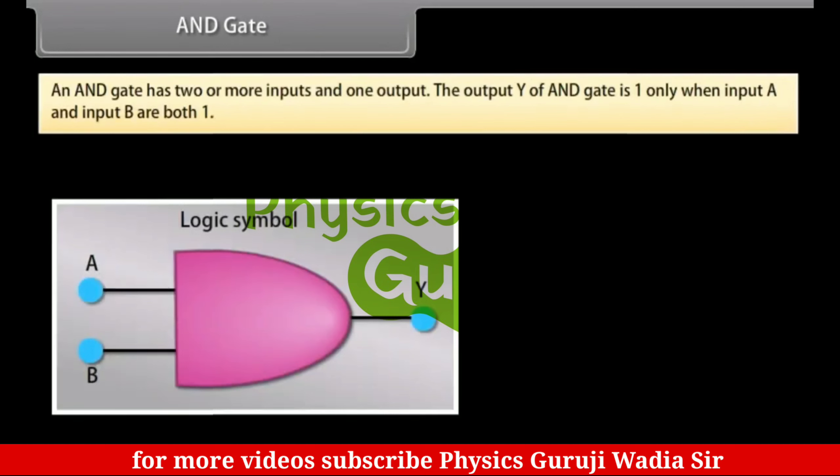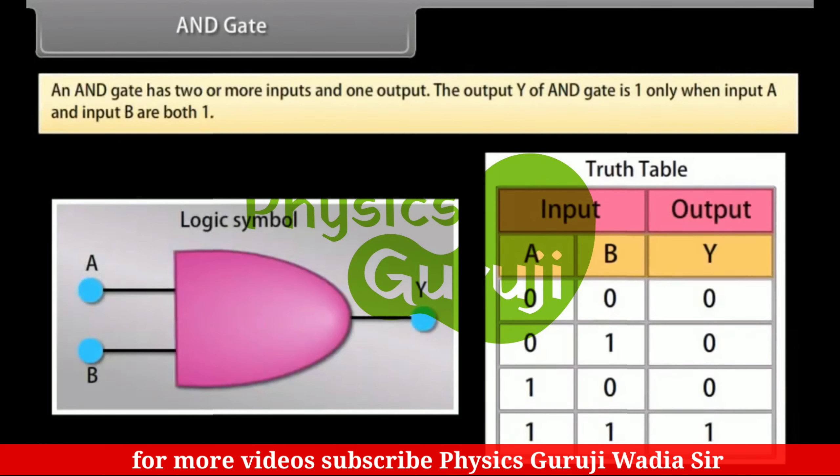AND-Gate: An AND-Gate has two or more inputs and one output. The output Y of AND-Gate is one only when input A and input B are both one.